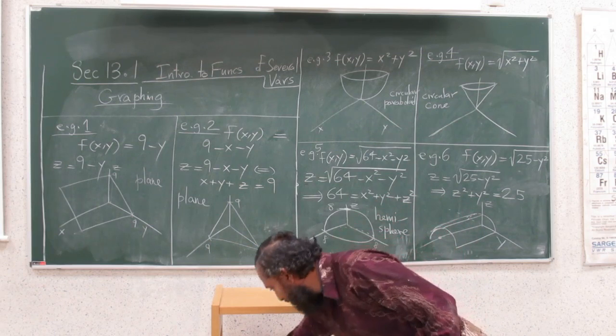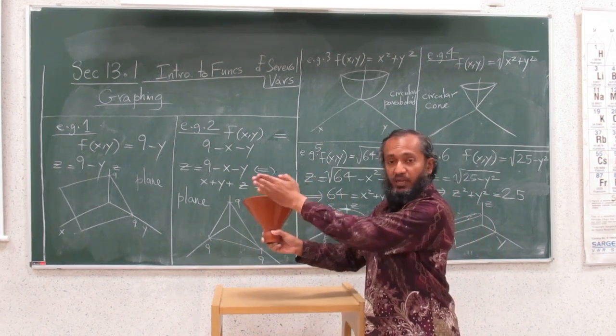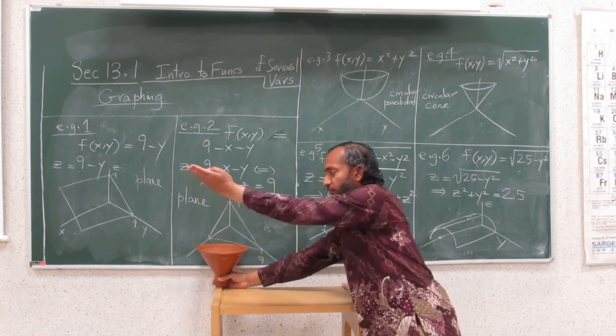The circular cone would be this object, this straight line profile. It's not a parabola profile, okay? I mean, centered at the origin and extending upwards, whatever.